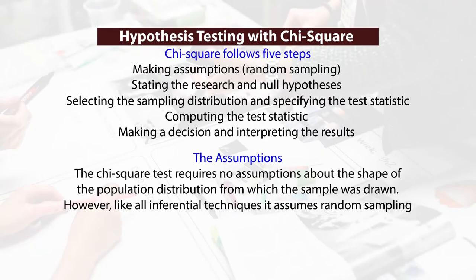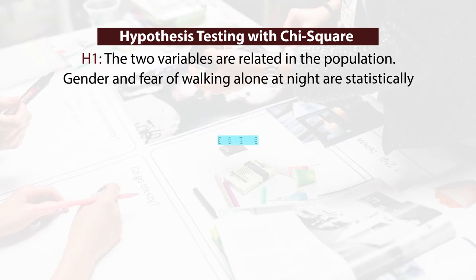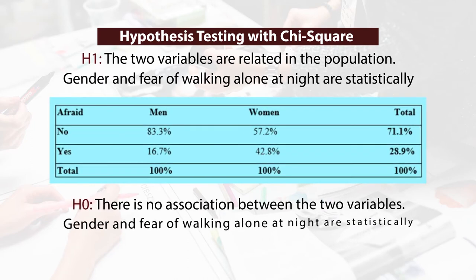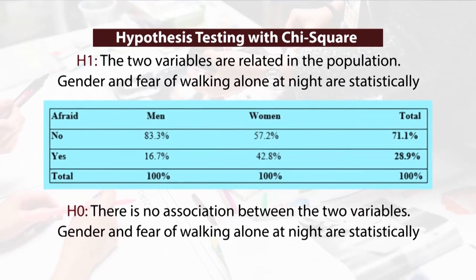The alternate hypothesis H1 states that the two variables are related in the population — for example, that gender and fear of walking alone at night are statistically dependent.